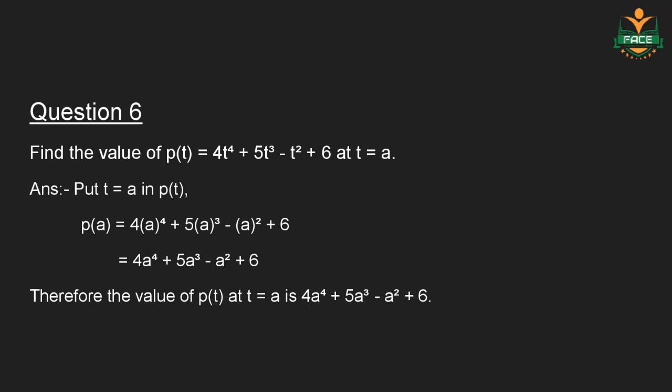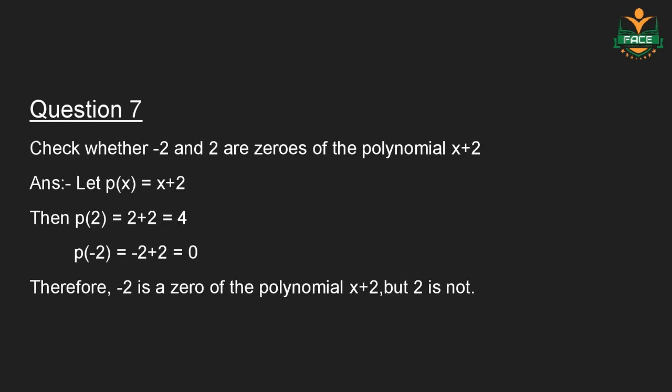Question number 7: Check whether minus 2 and 2 are zeros of the polynomial x plus 2. Let P(x) is equal to x plus 2. Then P(2) is equal to 2 plus 2 is equal to 4. P(minus 2) is equal to minus 2 plus 2 is equal to 0. Therefore, minus 2 is a zero of the polynomial x plus 2, but 2 is not.